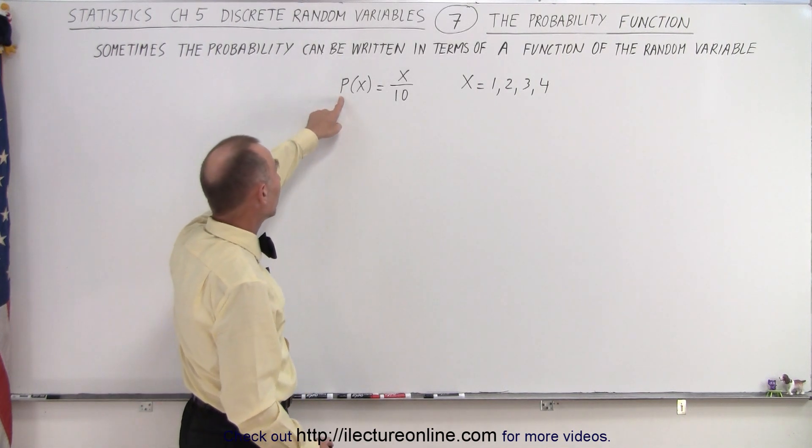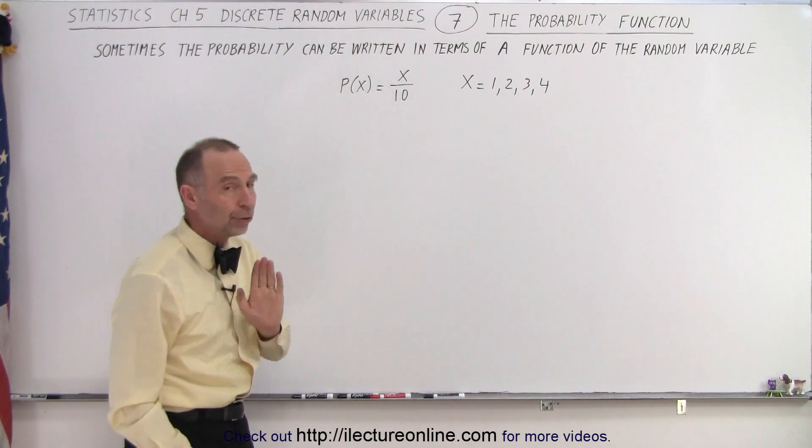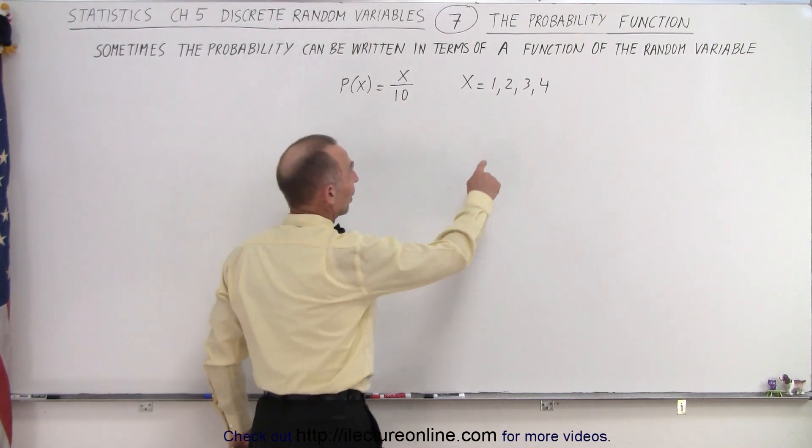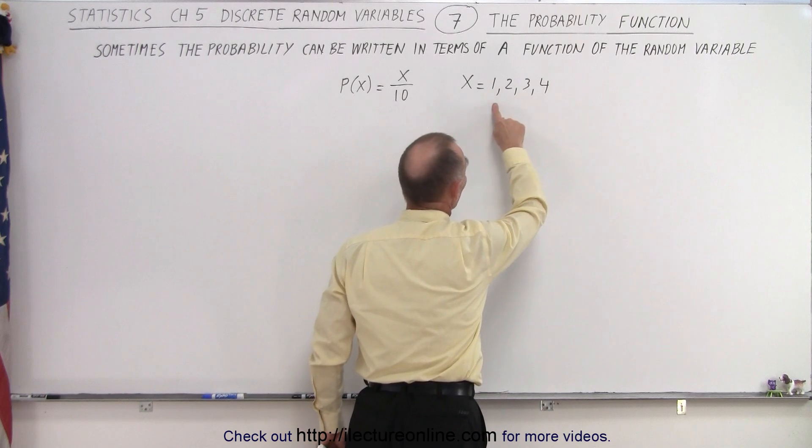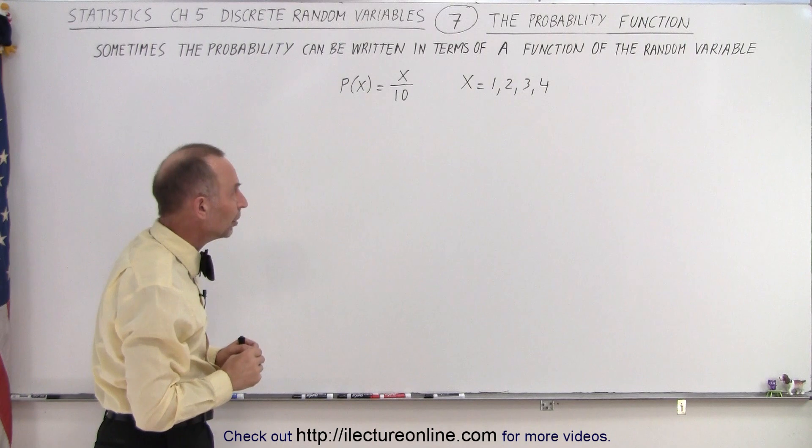The probability of the random variable x is equal to x over 10. Now notice we've put a limit as to what x can be. First of all, x can only be an integer which makes it a discrete random variable.